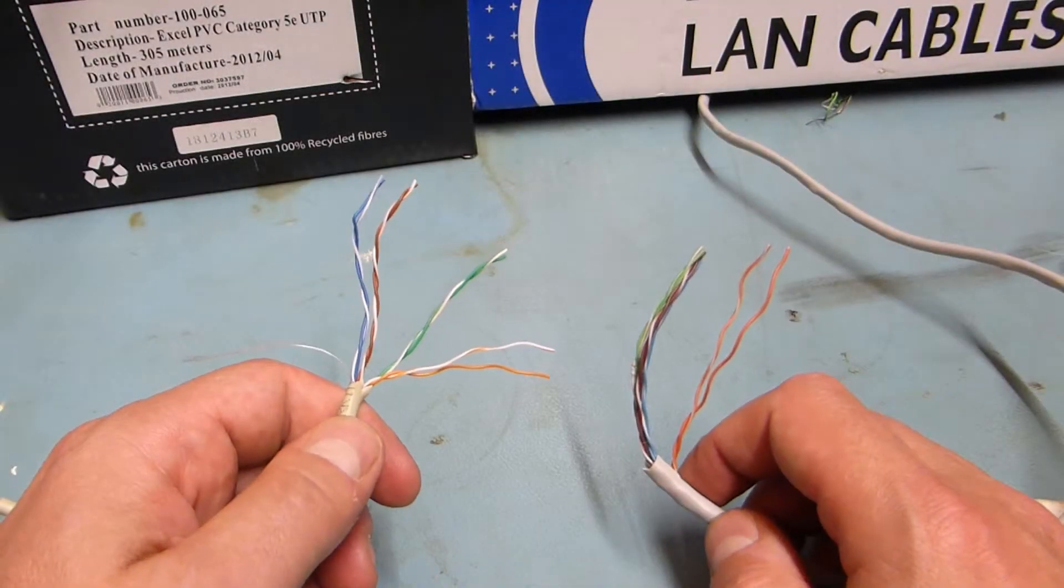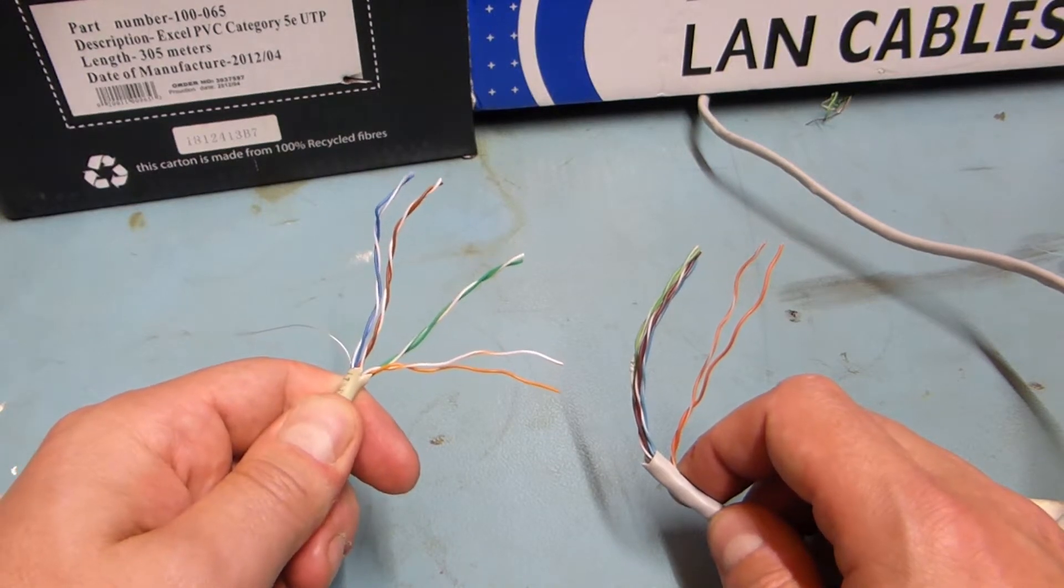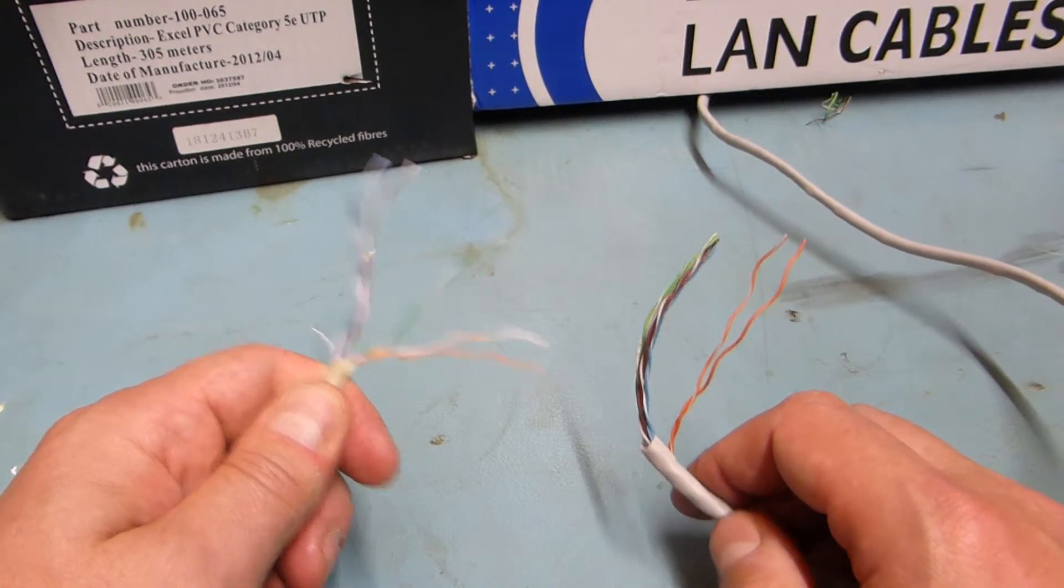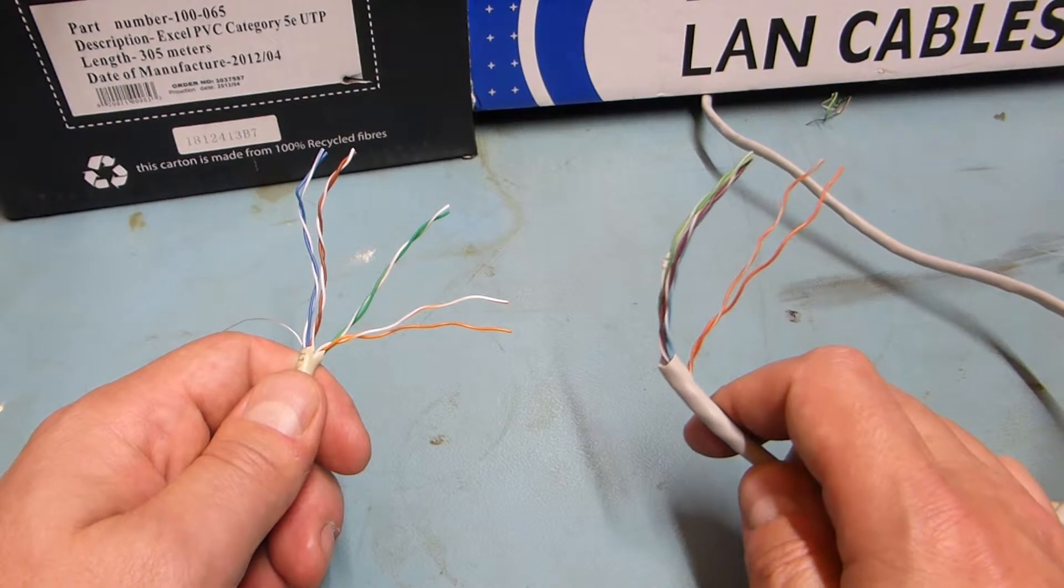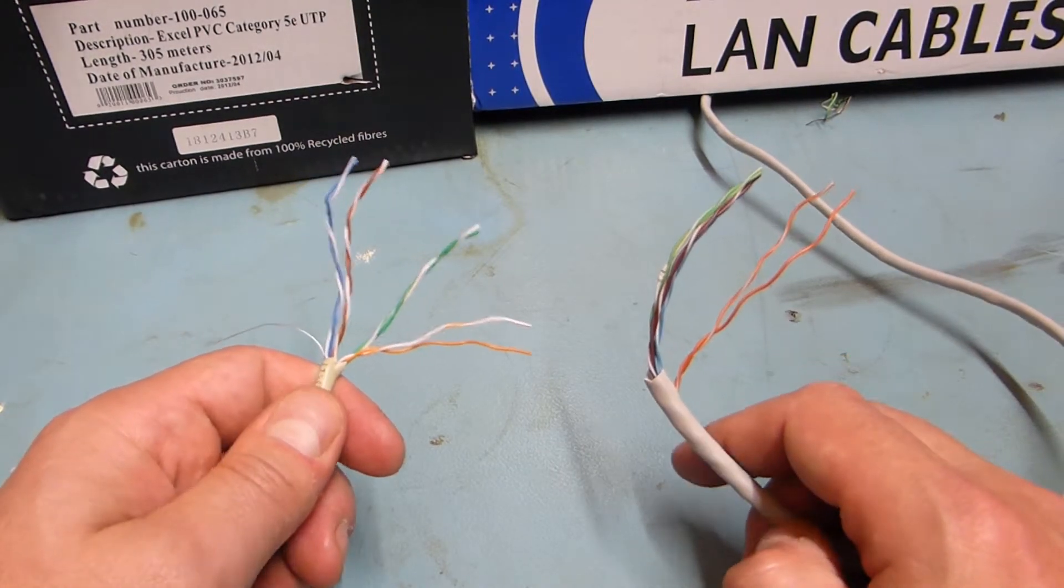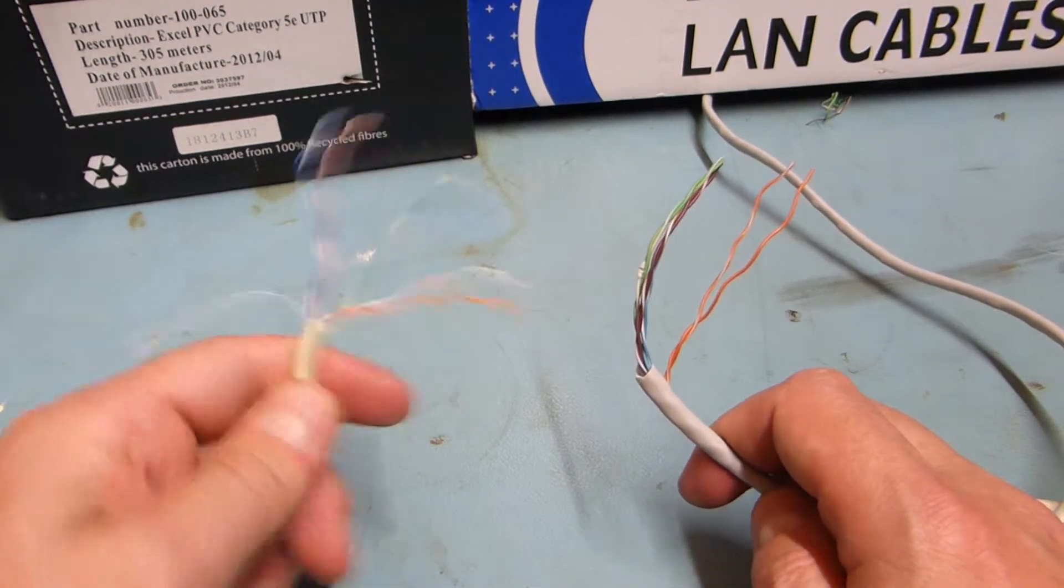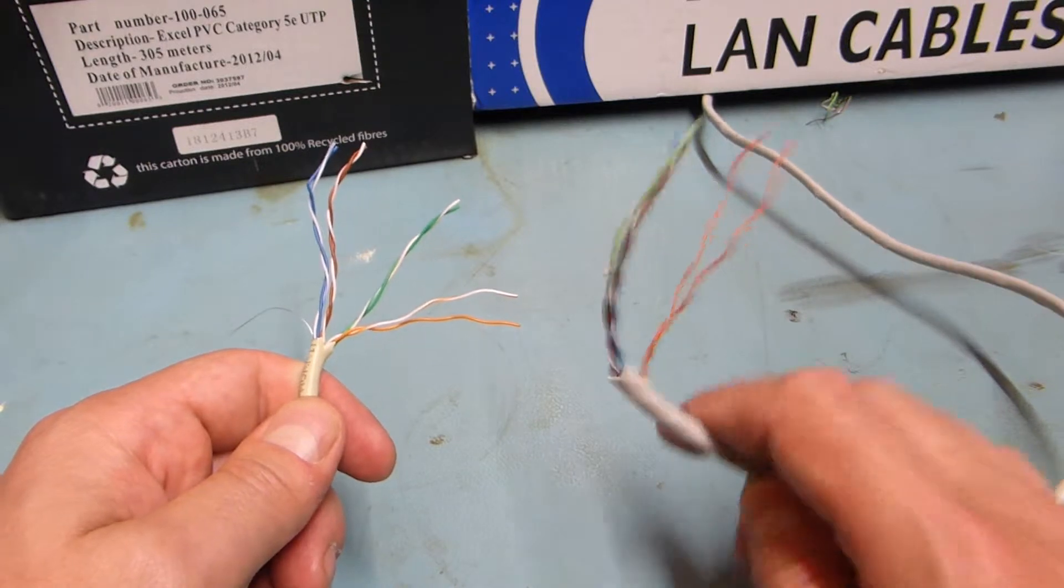So what's the difference? This is solid copper Cat5e cable. This is solid aluminum Cat5e cable. Now anyone should be able to tell that solid copper is going to be a much better conductor than solid aluminum.